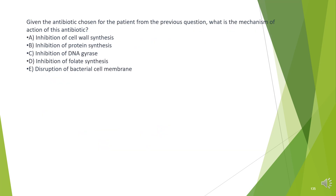Given the antibiotic chosen for the patient from the previous question, what is the mechanism of action of this antibiotic? A. Inhibition of cell wall synthesis. B. Inhibition of protein synthesis. C. Inhibition of DNA gyrase. D. Inhibition of folate synthesis. E. Disruption of bacterial cell membrane.